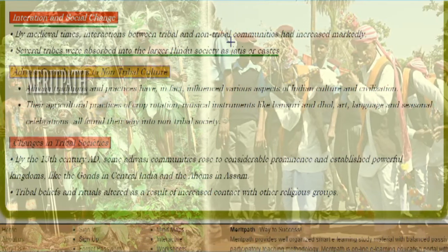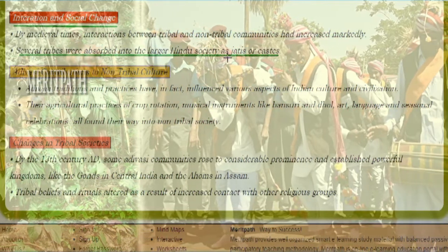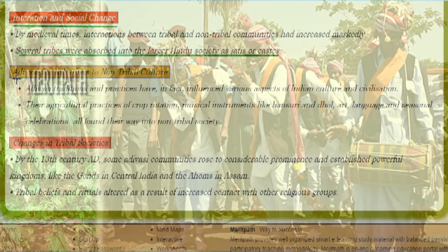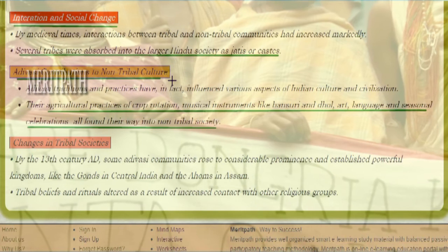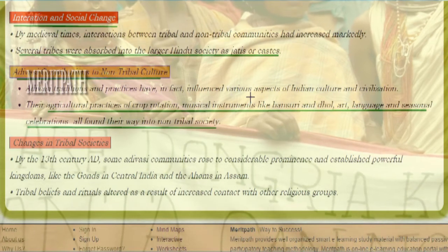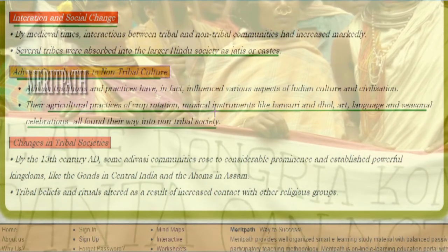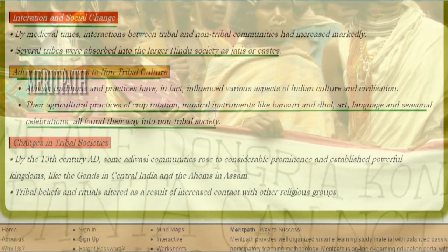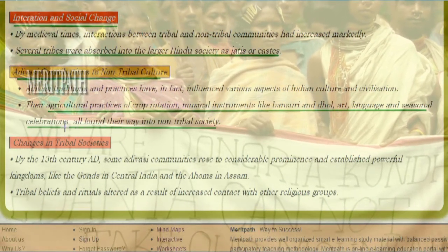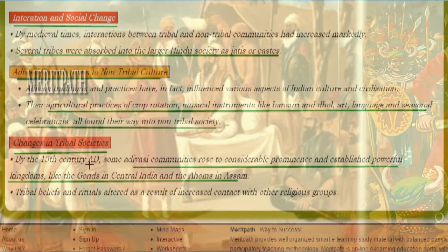By the medieval period, tribal and non-tribal communities had increased in population. Many tribal people were absorbed into the larger Hindu society and treated as jatis or castes. The Adivasis contributed significantly to Indian culture and civilization — practices of crop rotation, playing of musical instruments such as Bansuri and Dhol, their art, language, and seasonal celebrations all later entered into non-tribal society.